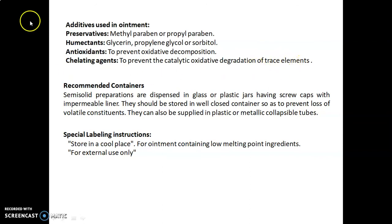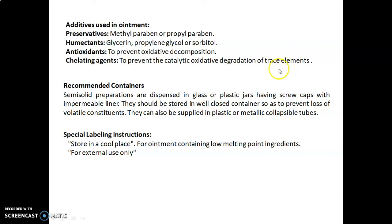Examples of antioxidants are BHA (butylated hydroxyanisole) and BHT (butylated hydroxytoluene). The best example of a chelating agent is EDTA — ethylenediamine tetraacetic acid — which is also known as a sequestering agent. Recommended containers: semi-solid preparations are dispensed in glass or plastic jars having screw caps with an impermeable liner.